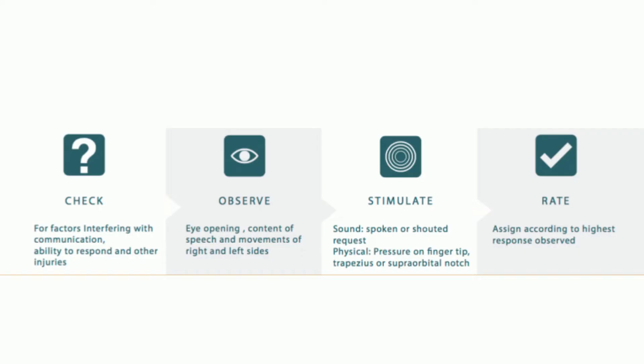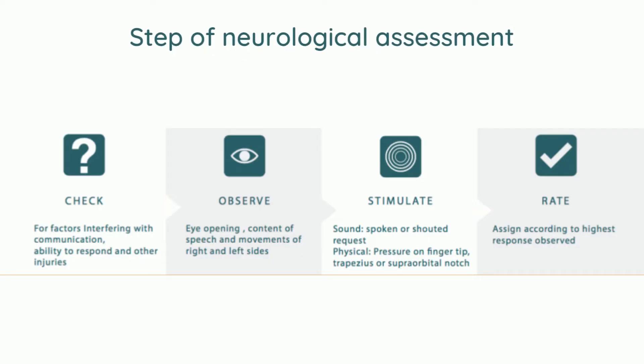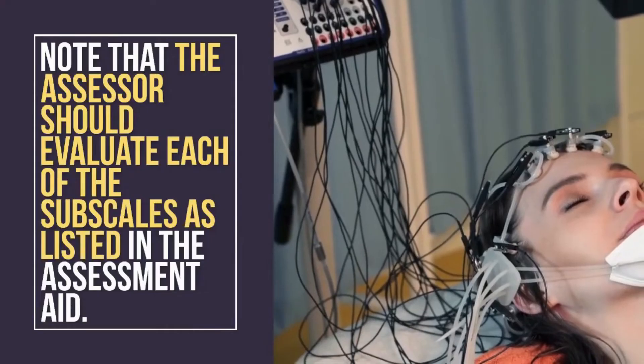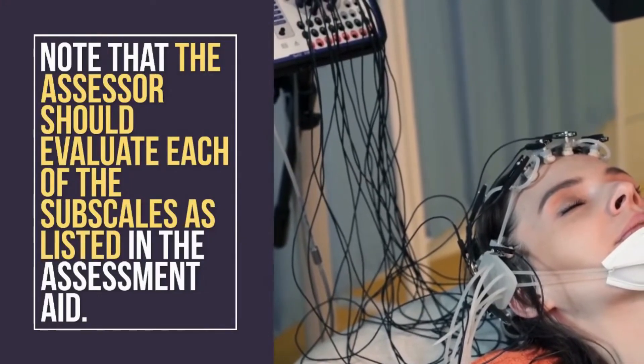The GCS assessment has four steps: check, observe, stimulate, and rate. Check for factors interfering with communication and the ability to respond. Observe eye opening, content of speech, and movement. Stimulate the patient using verbal commands or by applying pressure on fingertips, trapezius, or supraorbital notch. Lastly, rate or assign according to the highest response observed.